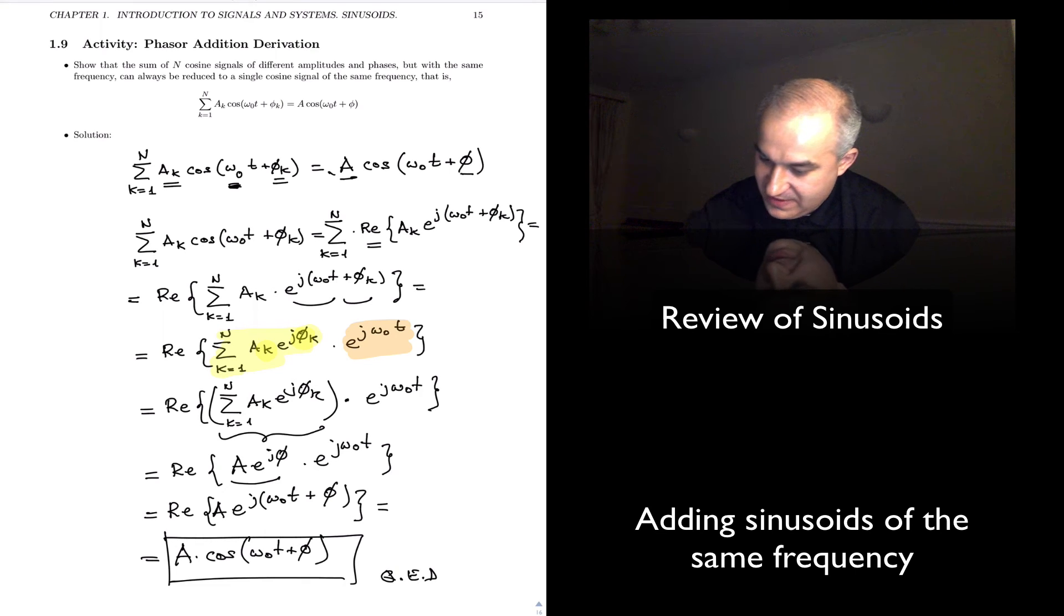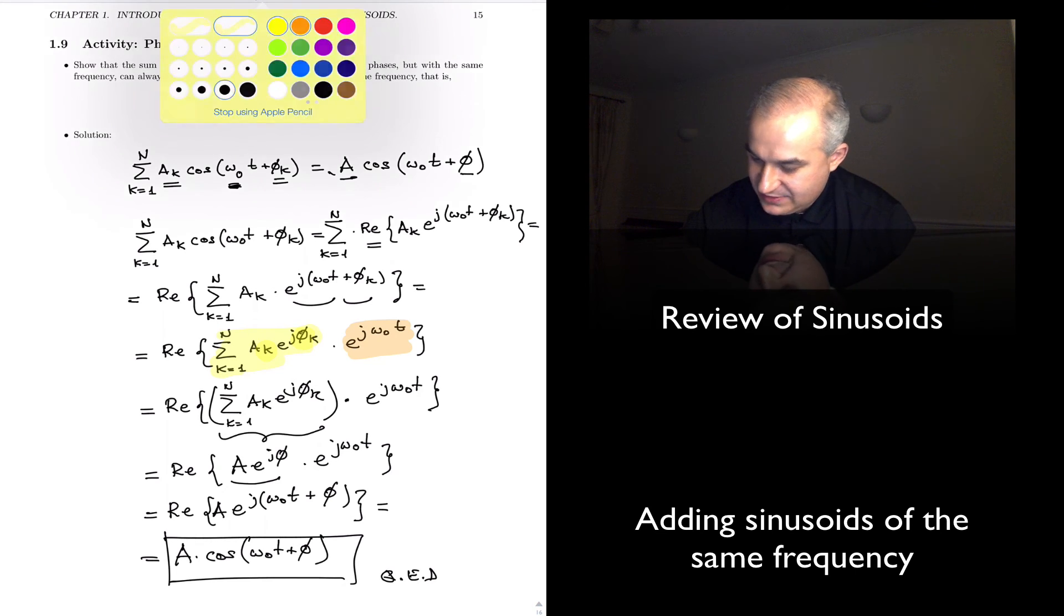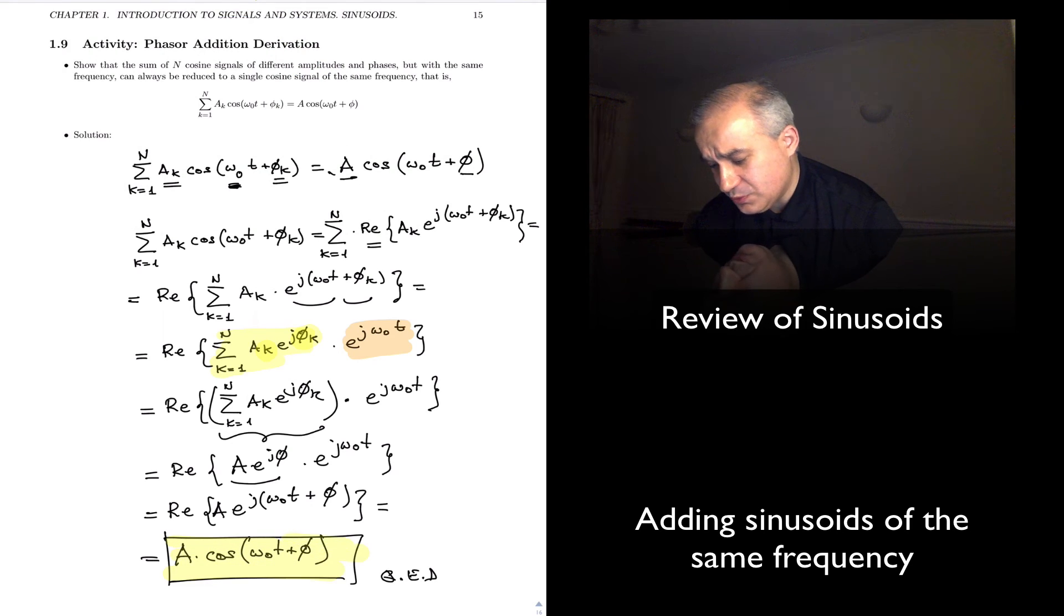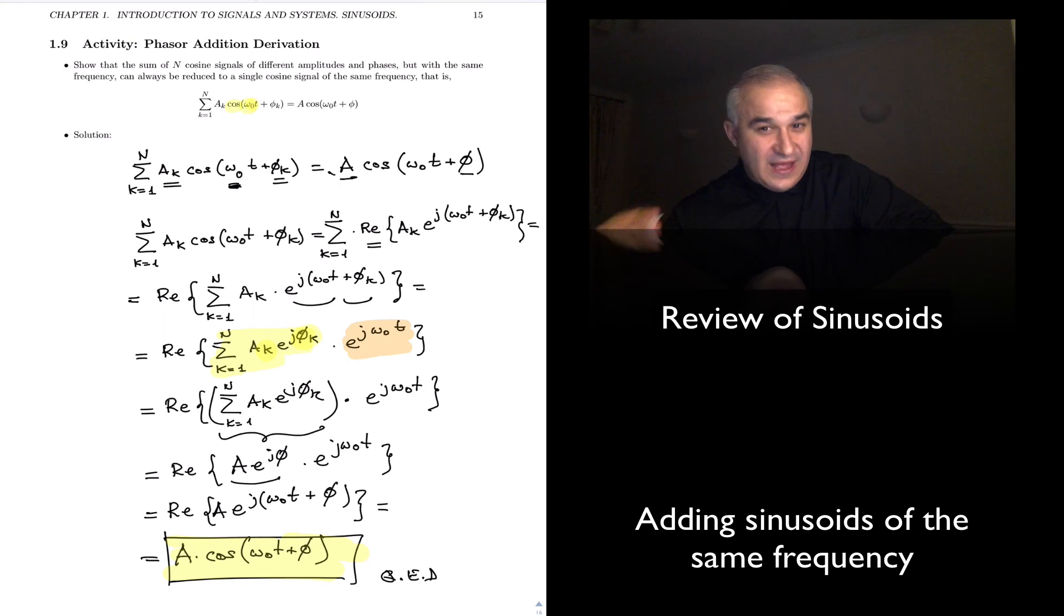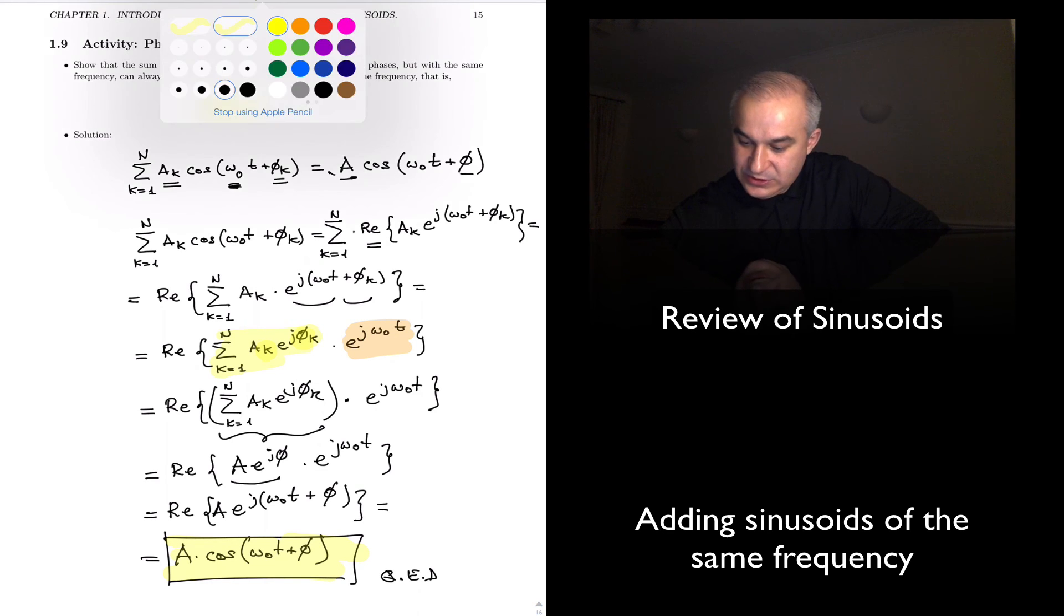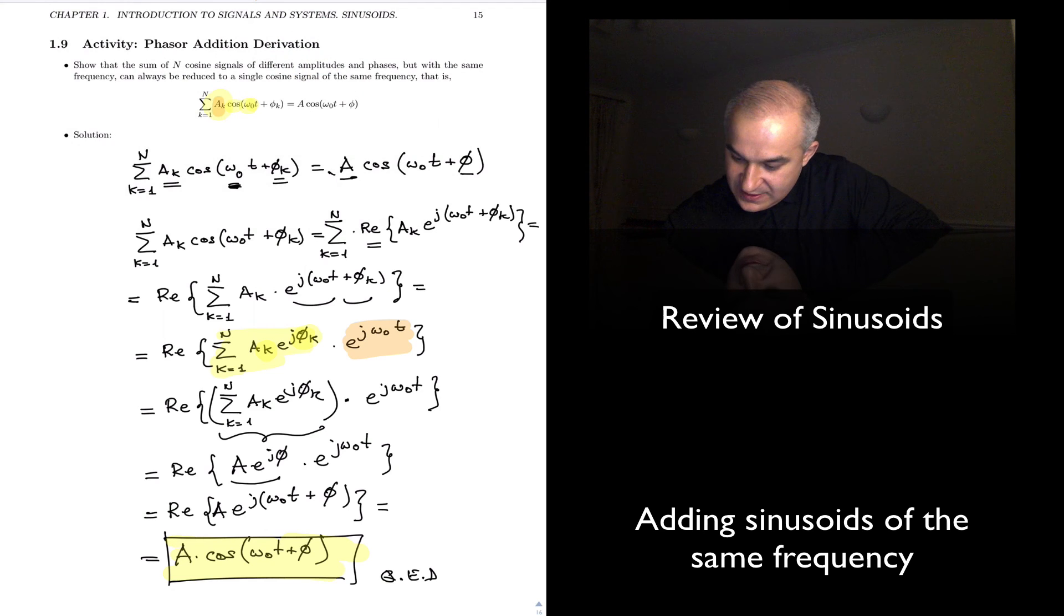Now, in all the math, sometimes we can get lost as to what we were trying to do. We were trying to show that if we have a sinusoidal signal of a particular frequency, and then we have another one of the same frequency, and then another one of the same frequency, and so we add many of them, that we can have different amplitudes, different amplitude, different phase. We add them all.